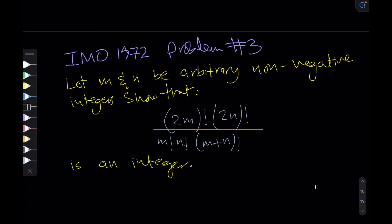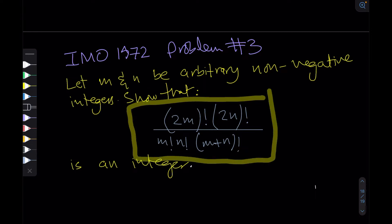Let m and n be arbitrary non-negative integers. We need to show that (2m)! × (2n)! divided by m! × n! × (m+n)! is an integer. This is problem number three from IMO 1972.